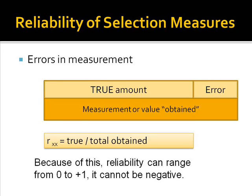Reliability is conceptualized as the ratio of the true amount to the total value obtained. If error is a large component, that is, our measuring tool is not very consistent, then the reliability would be much less than 1. Because of this way in which reliability is conceptualized, reliability ranges from 0 to plus 1 and is never negative.